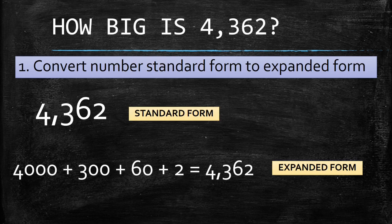First, we're going to convert the number from standard form to expanded form. In standard form, the number is written as 4,362. And in expanded form, the number is written as 4,000 plus 300 plus 60 plus 2 equals 4,362.